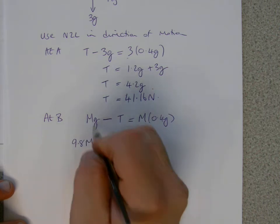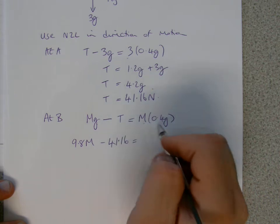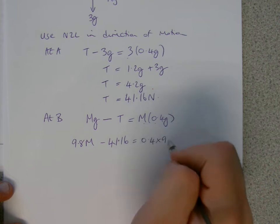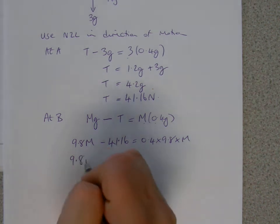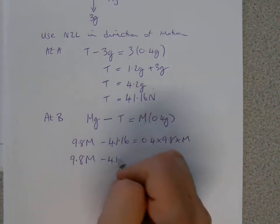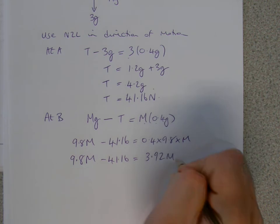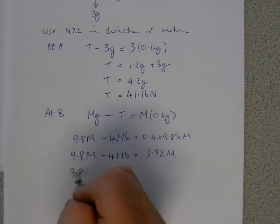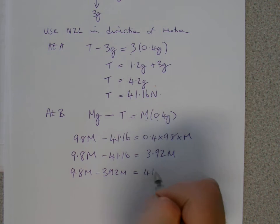Take away 9.8 for G, and then the M, take away then 41.16 equals then the M times this 0.4G, so 0.4 times 9.8 times M. So we get this, so 0.4 times 9.8, and we get 3.92M. So if we take then this 3.92M over, 9.8M minus 3.92M, and then 41.16.